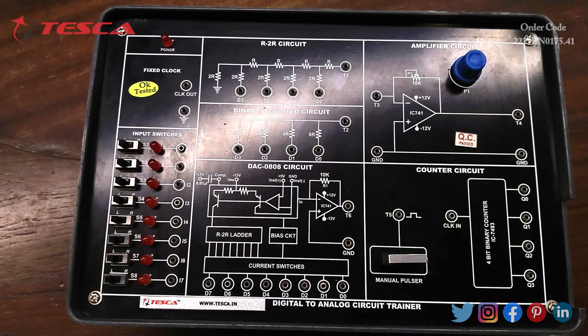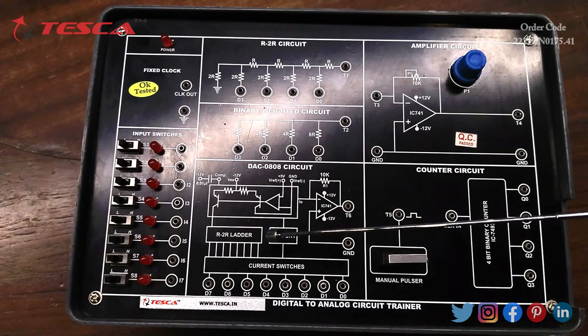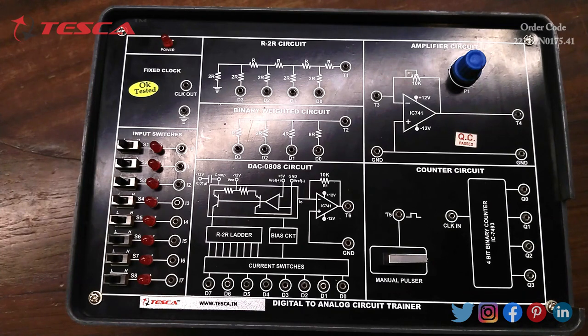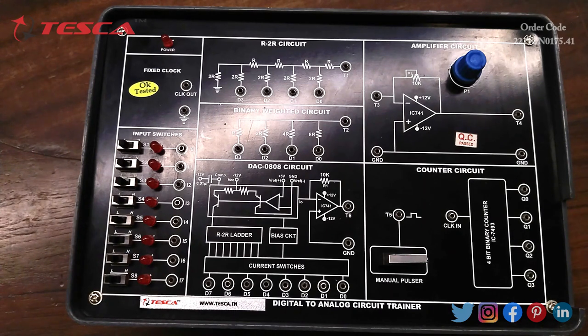Then we have the next block, DAC0808 circuit. One op amp 741 is used in this circuit as amplifier. Input is to be provided through D0 to D7 and output can be observed at T6.